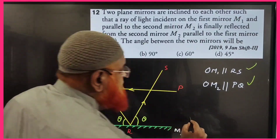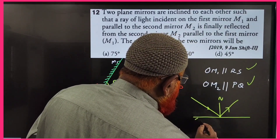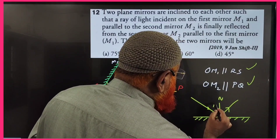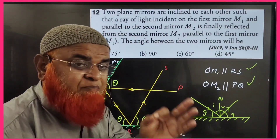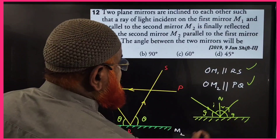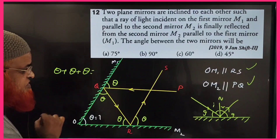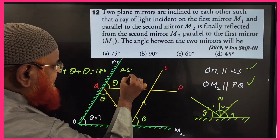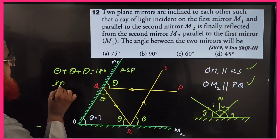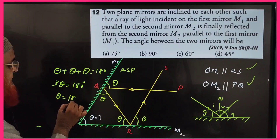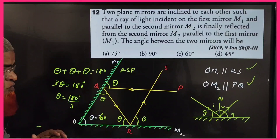Similarly, since RS is parallel to OM1, the glancing angle at M1 is also theta. Glancing angles are always equal in reflection. So we have three angles — theta, theta, and theta — inside the triangle formed by the two mirrors and the ray path. By the angle sum property: theta plus theta plus theta equals 180 degrees, so 3 theta equals 180, giving theta equals 60 degrees.